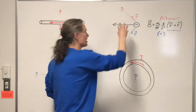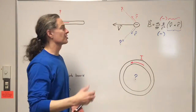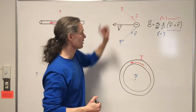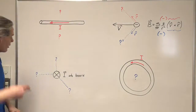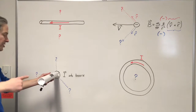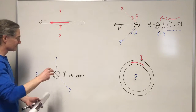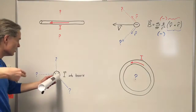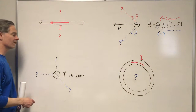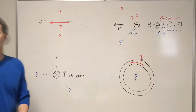Secondly, I've got a negative charge moving to the left, and I want to know the direction of the magnetic field that moving charge produces here and here. Thirdly, I have a current going into the board. Imagine I've got a wire with current going this way into the board. The little x represents the tail feathers of the current vector, so the current's going into the board, and we want to find the direction of the magnetic field that this current produces here and here and here.